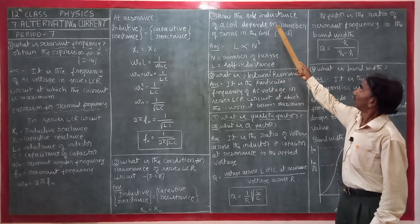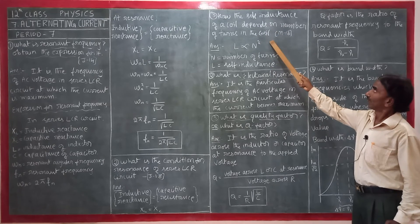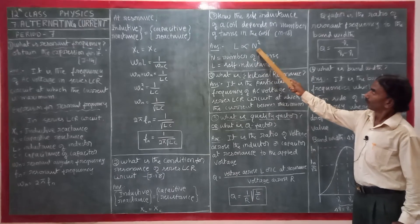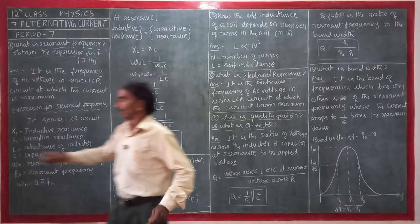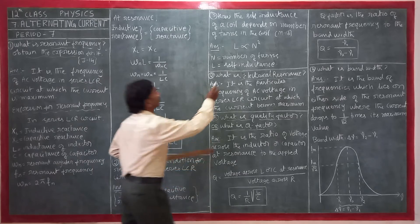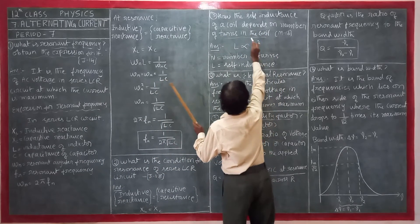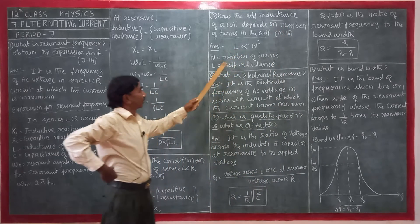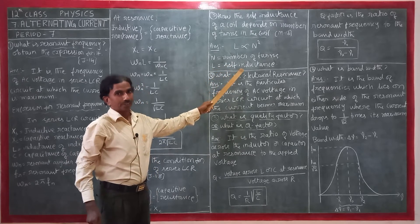Next question: how does the self-inductance of a coil depend on the number of turns in the coil? This is a very very important question — it was asked in July 2018. L is proportional to N² (L ∝ N²). Here N is the number of turns and L is the self-inductance. Underline this. Underline this.